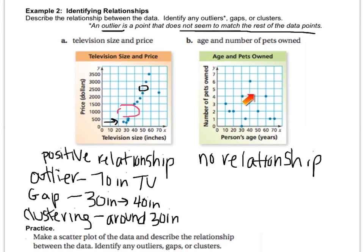There doesn't seem to be any outliers, because they kind of all are outliers. No gaps, no clustering, so we just have no relationship.